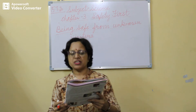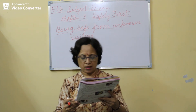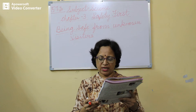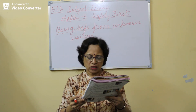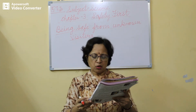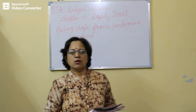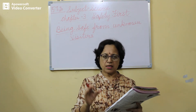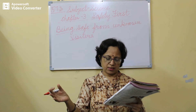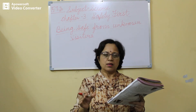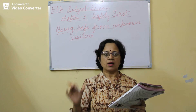Being safe from unknown visitors: we should use safety devices to check a visitor, such as a magic eye or opening the door with the safety chain attached. We should open the door only for those people whom we know. We should not give our address or other details to unknown callers.